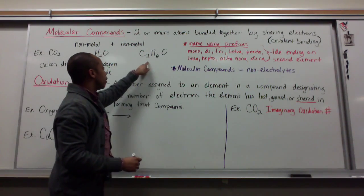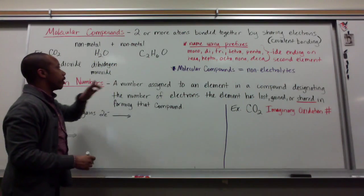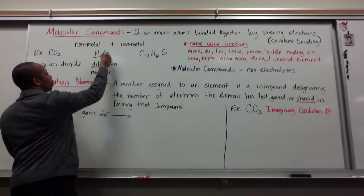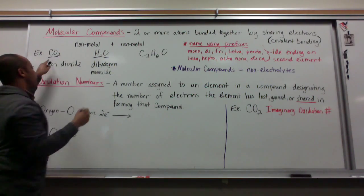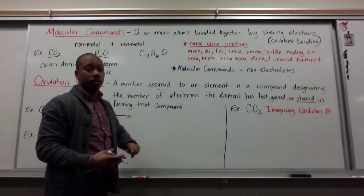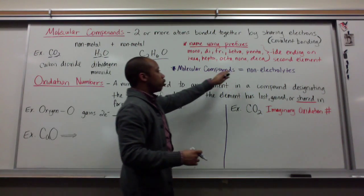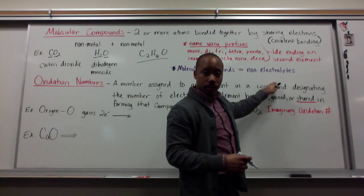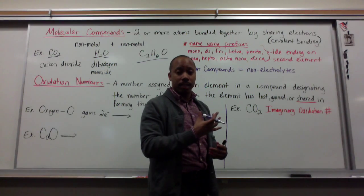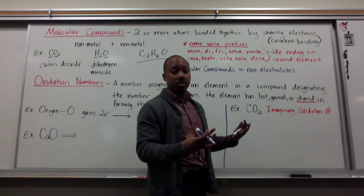Now, this element here, I can't name it using this system. You can only use this system when you're naming binary compounds. Binary compounds means that I only have two different elements existing in my compound. Here I have three. I can't name it using this system. Now, molecular compounds do not form electrolyte solutions. They do not dissolve in water to form compounds that can conduct electricity. They're not ions. Thus, no electrolytes.